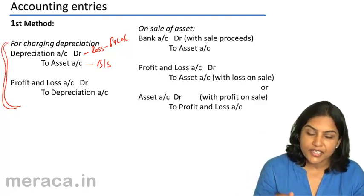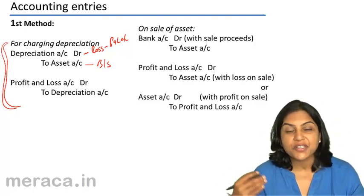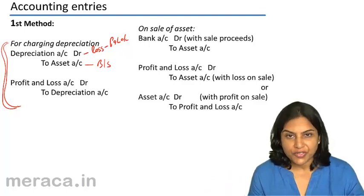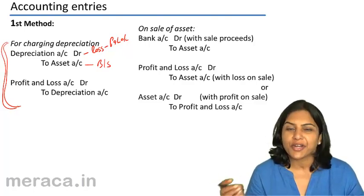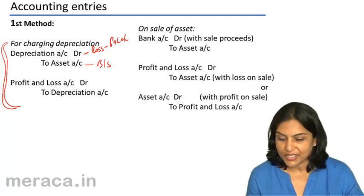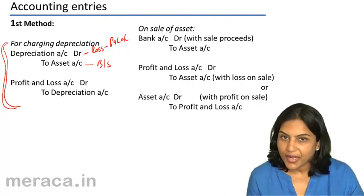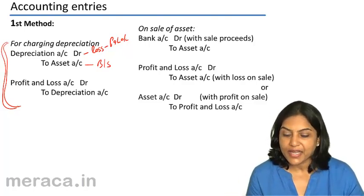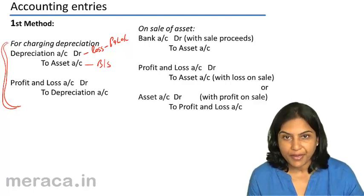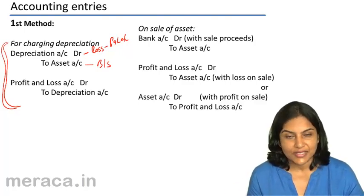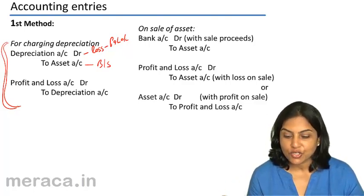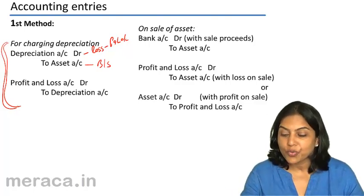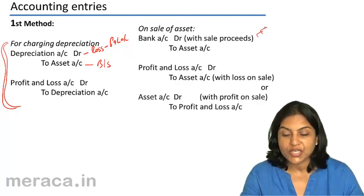Under this method, if the asset is sold subsequently after its useful life or at any point in time, what are the accounting entries? When we sell the asset, money comes in — bank account debit to asset account with the sale proceeds.